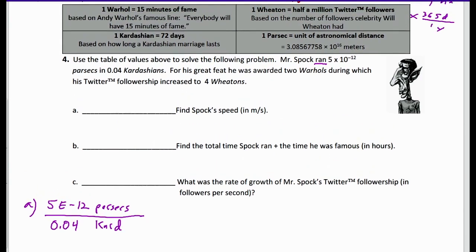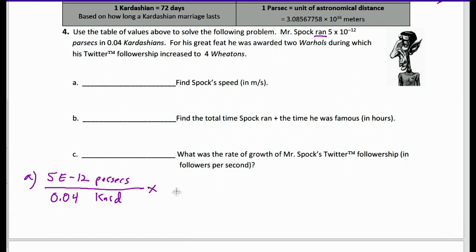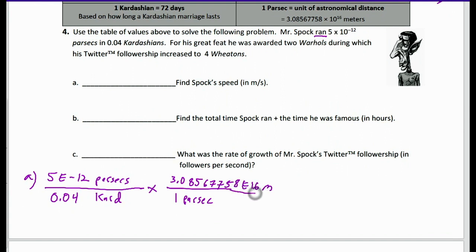So let's write that down: 5E−12 parsecs over 0.04 Kardashians. It wants meters per second. Looking at my conversions: one parsec equals 3.08567758 × 10 to the 16th meters. I'll put parsecs on the bottom and the meter equivalent on top. Parsecs cancel out, and now I've got meters. Now I need to go from Kardashians to seconds.